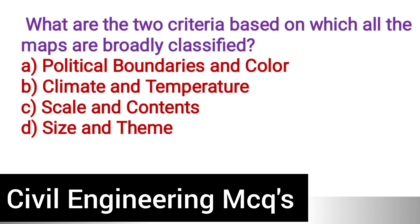Next question: What are the two criteria based on which all maps are broadly classified? Option A: Political boundaries and color. Option B: Climate and temperature. Option C: Scale and contents. Option D: Size and theme. The correct answer is option C, scale and contents.